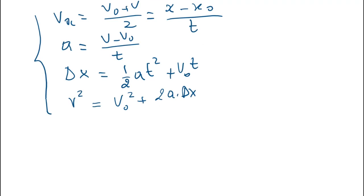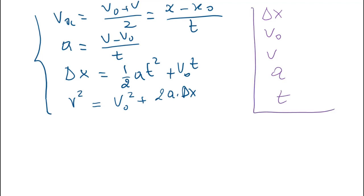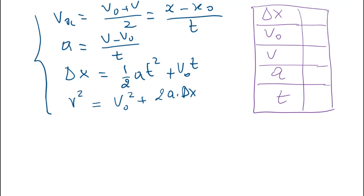Now we have all four equations needed to solve motion in one dimension problems. To solve efficiently, make a table with five variables: Δx, initial velocity v₀, final velocity v, acceleration a, and time t. Read the problem, plug in the three given values, then use the appropriate equation to solve for the unknowns. Next, we will apply these equations to free fall.